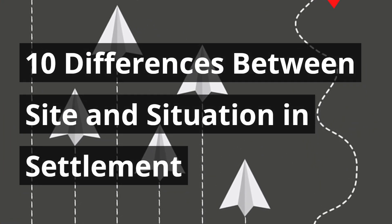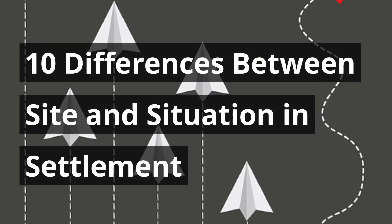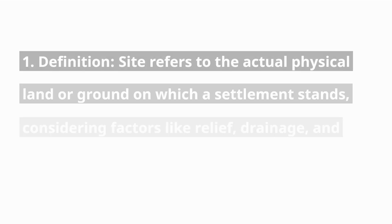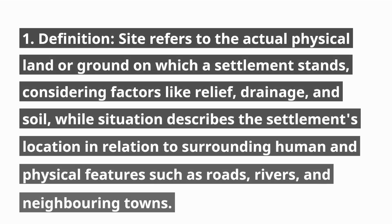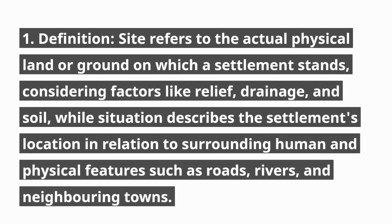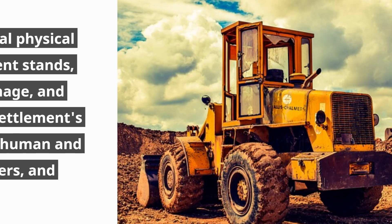10 Differences Between Site and Situation in Settlement. 1. Definition. Site refers to the actual physical land or ground on which a settlement stands, considering factors like relief, drainage, and soil, while situation describes the settlement's location in relation to surrounding human and physical features such as roads, rivers, and neighboring towns.